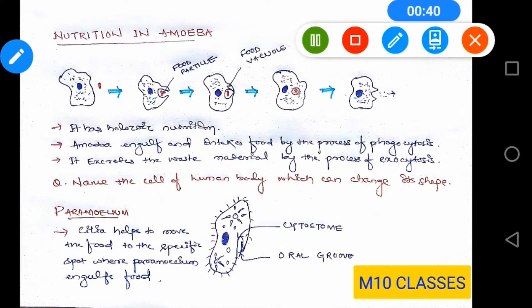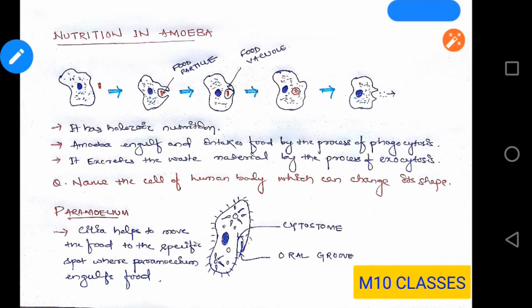First of all, what is the specialty of amoeba? Amoeba is a unicellular organism which can change its body shape. As we have already read, it has a holozoic mode of nutrition, that means it is going to engulf the food, and it has a special process called phagocytosis to engulf the food.